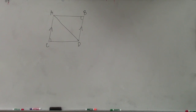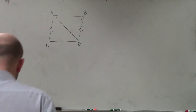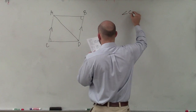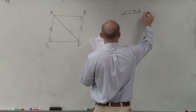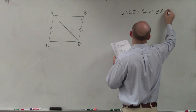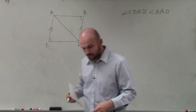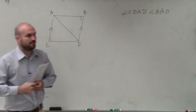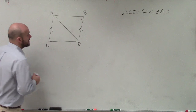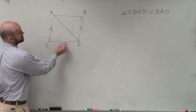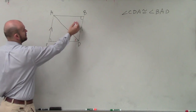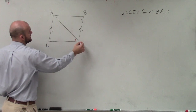So in problem 16, what they're asking us to do is prove that angle CDA is congruent to angle BAD. What we need to do is determine — those are going to be corresponding angles. So let's determine where those are at: CDA is congruent to BAD.